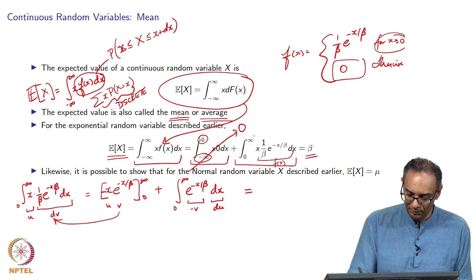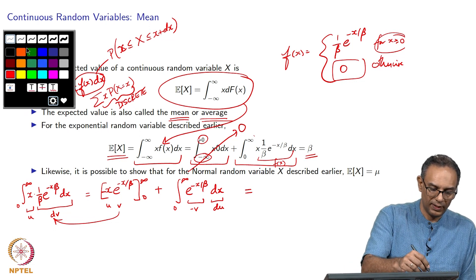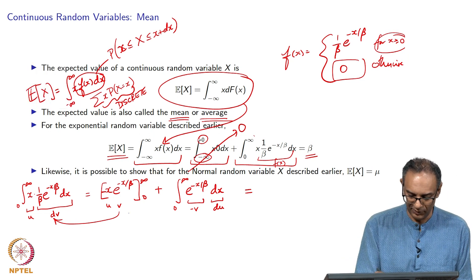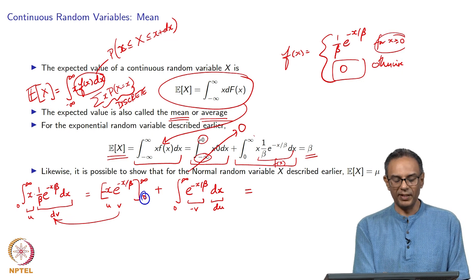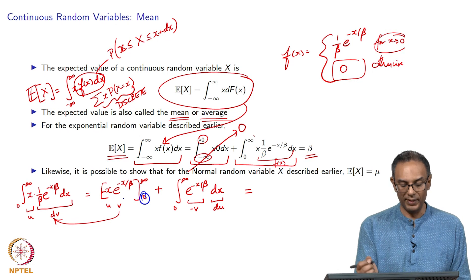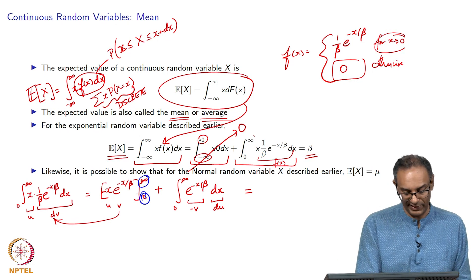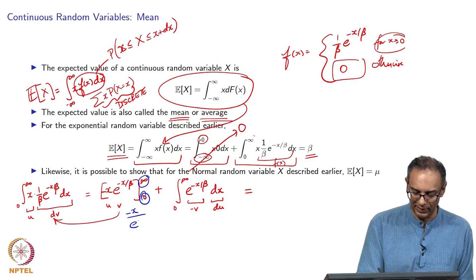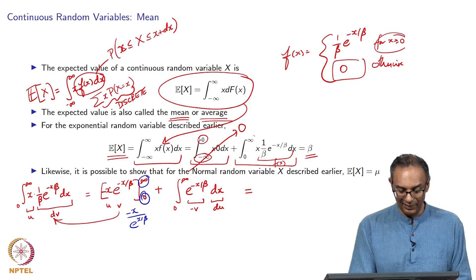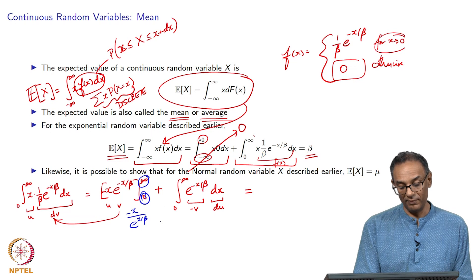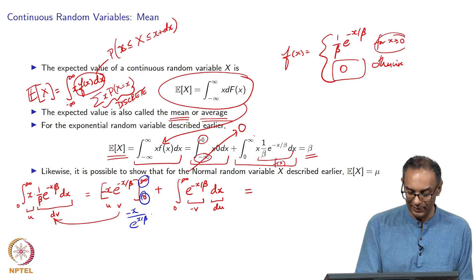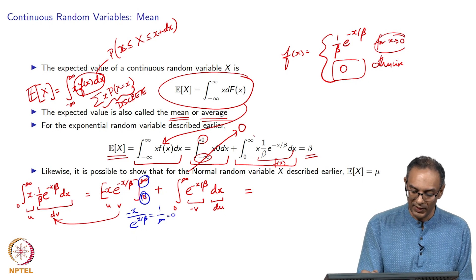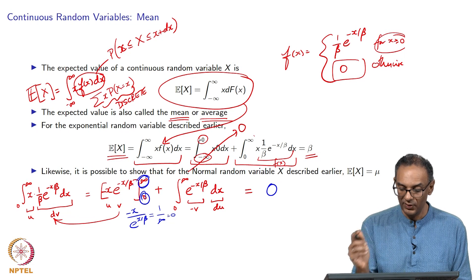An important thing is how we calculate the limits. When we plug in 0, we get 0 times e^0 which is 1, so 0 times 1 is 0 — that is the easy part. For infinity, we write this as negative x divided by e^(x/beta), and using L'Hôpital's rule once, we get 1 divided by infinity which is 0. So the first term equals 0 at both limits.